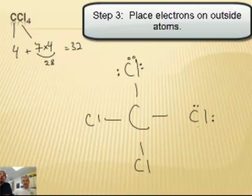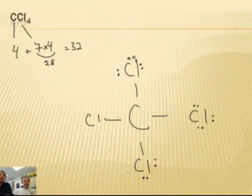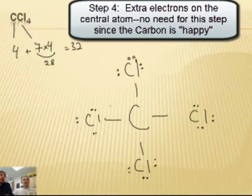18, 20, 22, 24, 26, 28, 30, 32. Okay, we're good. Everybody's happy. Each chlorine has 8, carbon has 8, everyone's happy.